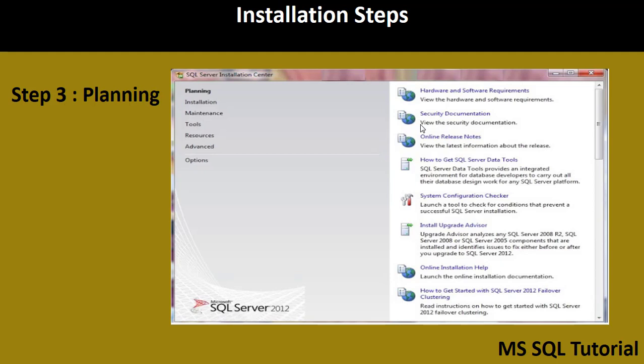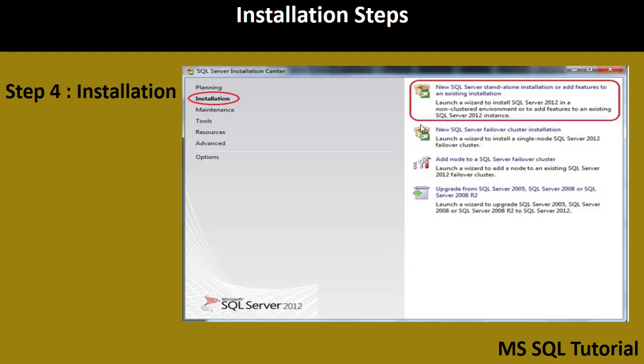Once planning is completed, select the 'Installation' option as shown in Step 4. You will find four options on the right-hand side: new SQL Server standalone installation or add features to an existing installation; new SQL Server failover cluster installation or add node to a failover cluster; and upgrade from SQL Server 2005, 2008, or 2008 R2. If SQL Server is not already installed, select the first option.